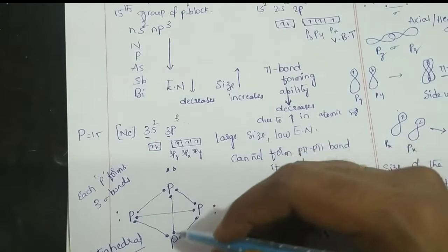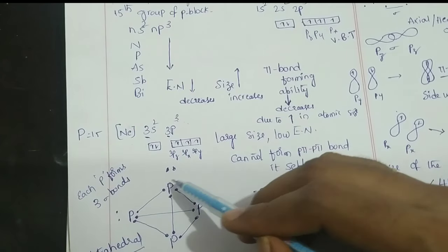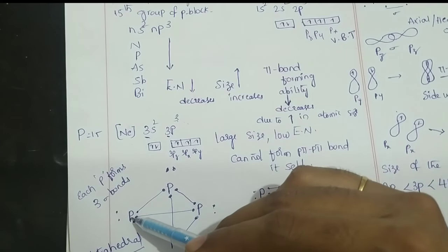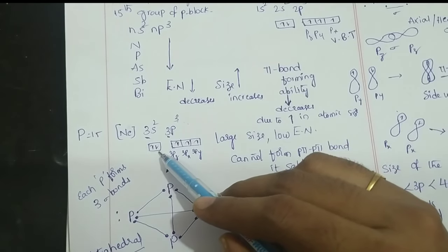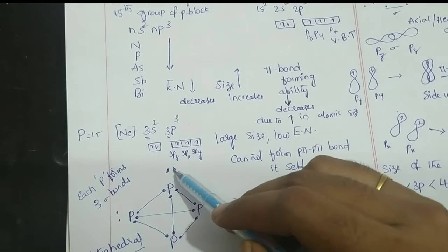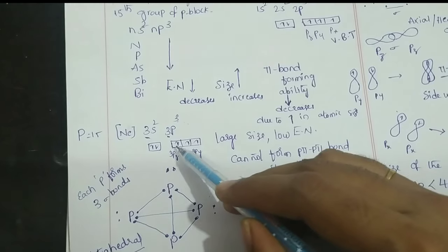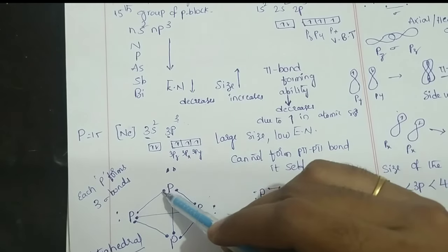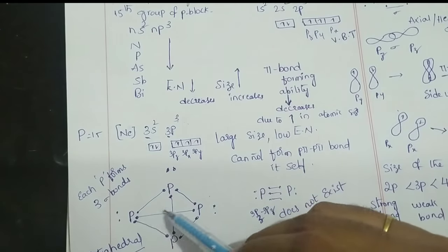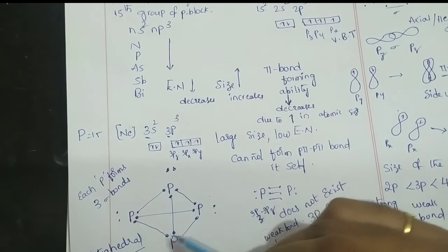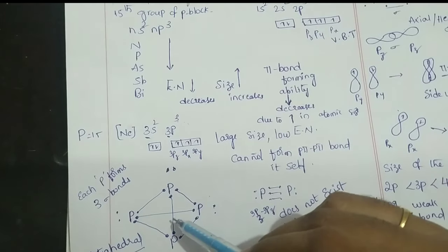In the structure of P4, four phosphorus atoms are present. In each phosphorus atom, two paired electrons do not participate in bonding. The three unpaired electrons participate in bonding, so each phosphorus forms three sigma bonds. The structure is tetrahedral.